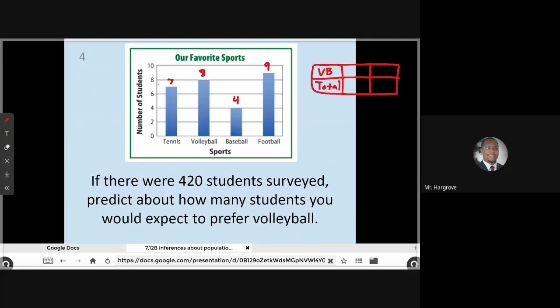And the reason I'm doing volleyball is because the question asks specifically, how many students will we expect to prefer volleyball? So I'm looking at the volleyball section. And if I just look at this data right here in the bar graph, I see that nine students chose—I'm sorry, that's going to be eight students. So that's a mistake there. Let me erase that. It's actually eight students said that they prefer volleyball.